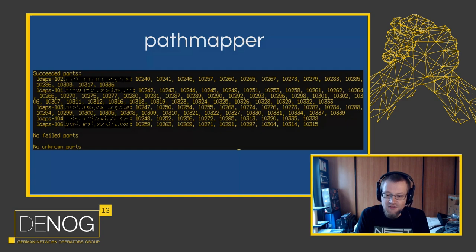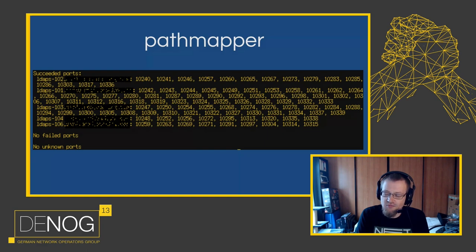The reason PathMapper exists is that I was sorely missing a tool like this during a debug session in the middle of the night where one of our core network devices had an inconsistency between the RIB and the FIB and was discarding some traffic. Finding out which device was actually causing this was far more difficult than it should have been, so I decided we needed a tool that could send repeatable traffic and make it easier to identify the problem.